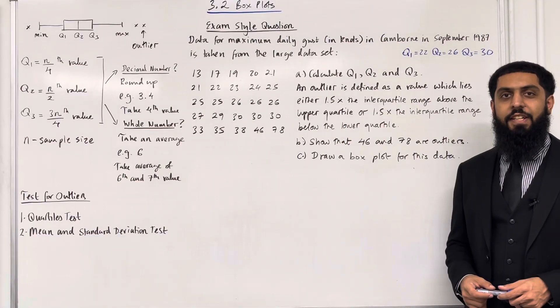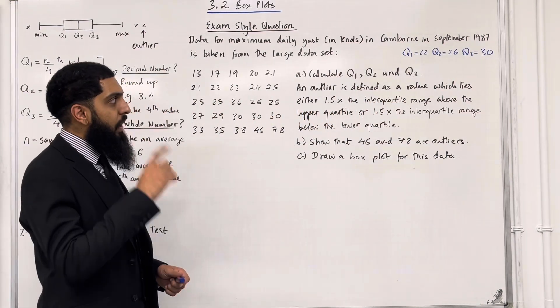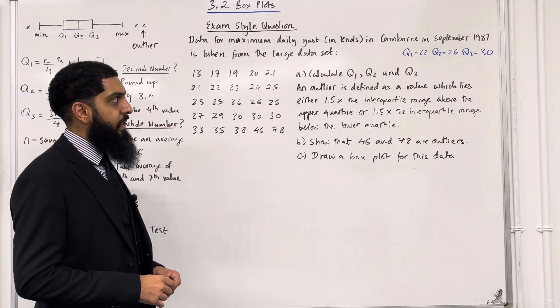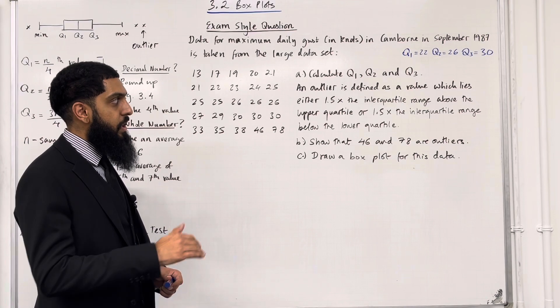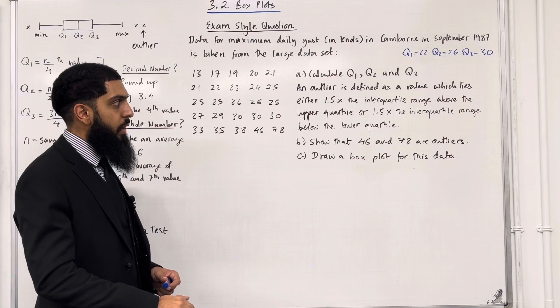Moving on to part B. An outlier is defined as a value which lies either 1.5 times the interquartile range above the upper quartile or 1.5 times the interquartile range below the lower quartile.